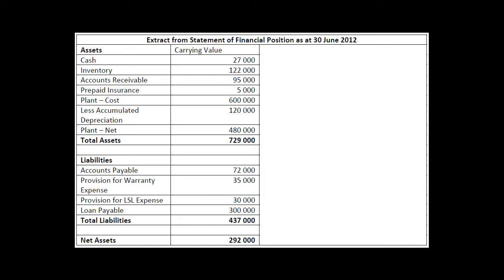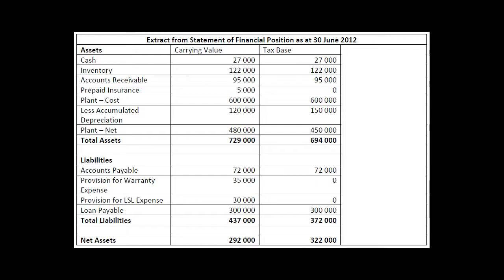Looking at assets first — the tax base of an asset is the amount that will be deductible for tax purposes. Cash and inventory — we're never going to see differences with those, so we can ignore them. Accounts receivable: you're not going to get a deduction for using that, so that gets disregarded. The only tax effect of accounts receivable would be the affiliated sales revenue which has already happened, but that's not what we're looking at here.